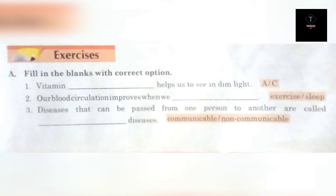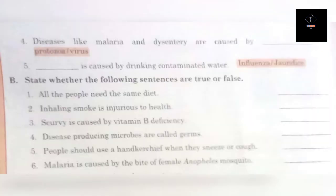In Section A, you have to fill in the blanks. For example, the first one is: 'Vitamin ___ helps us to see in the dim light.' The next one is: 'Our blood circulation improves when we ___ exercise.'